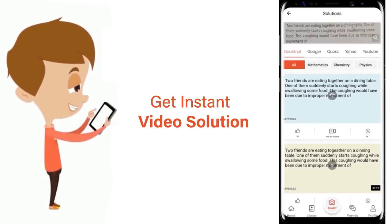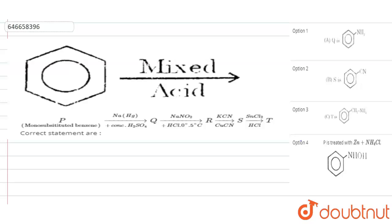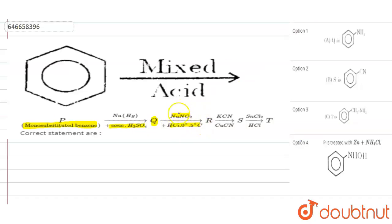Our question is a series of reactions in which benzene is reacting with a mixture of acid (mixed acid) forming a product P, a mono-substituted benzene. Further, P is reacting with sodium amalgam in the presence of concentrated H₂SO₄ forming Q. Q is undergoing diazotization reaction — the reaction with NaNO₂ plus HCl in the presence of 0° to 5°C temperature — forming compound R.